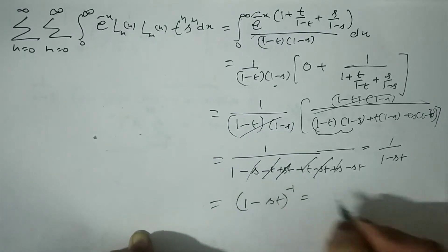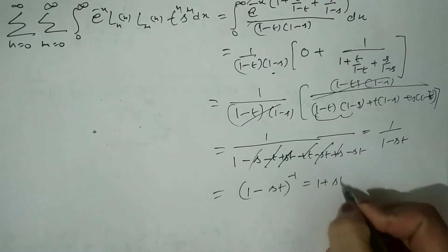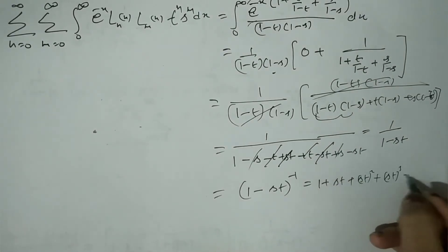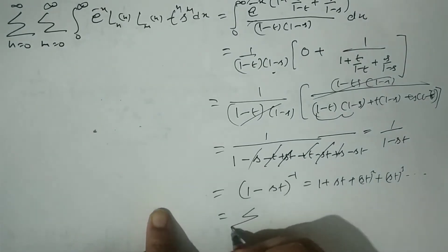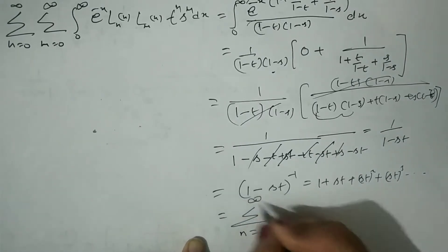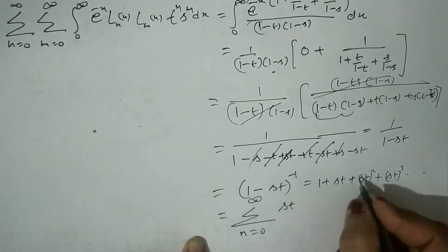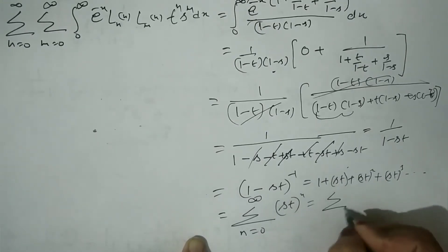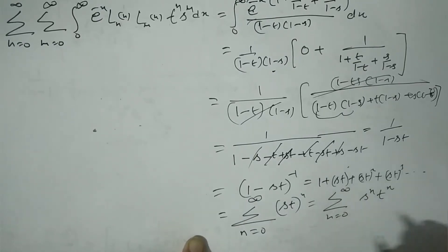So we get 1/(1-st), which can be written as (1-st)^(-1). Using the binomial expansion, this equals 1 + st + (st)^2 + (st)^3 + ..., which can be written as a summation with n from 0 to infinity of (st)^n, or equivalently, s^n · t^n.